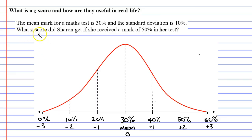It said, what Z-score did Sharon get if she received a mark of 50% in her test? Now, you'll notice that 50% lines up with plus 2, meaning that Sharon's Z-score is plus 2, or positive 2.